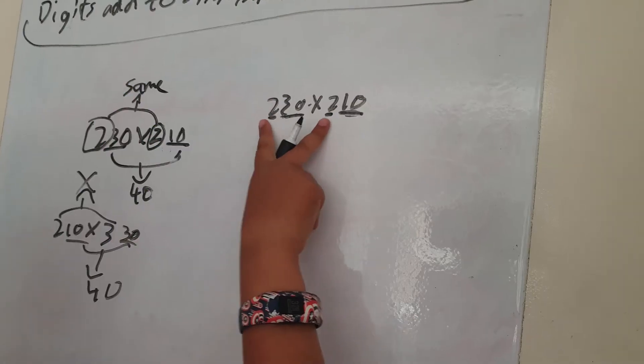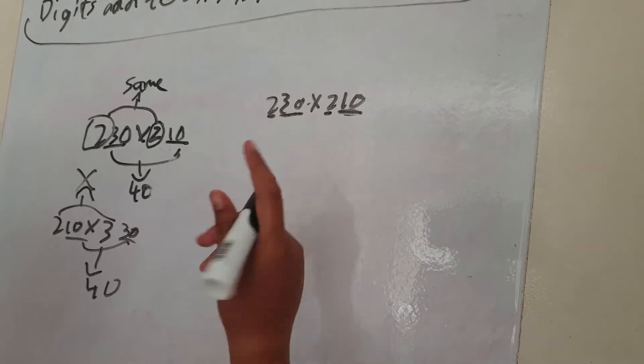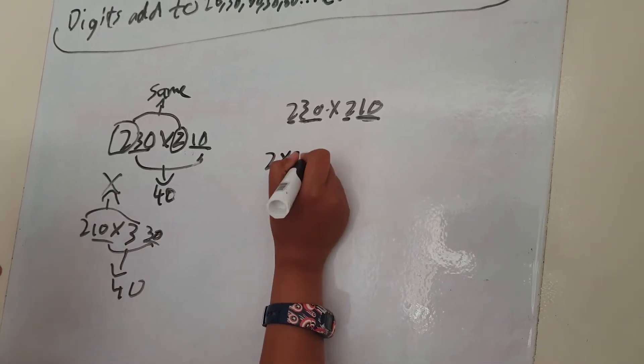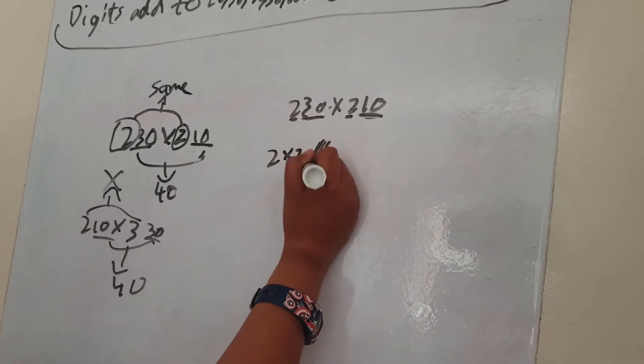All right, so now you have to get the first part of both of them, which will be the same, and you have to multiply them together. So 2 times 2, and then write like a little slash thing.